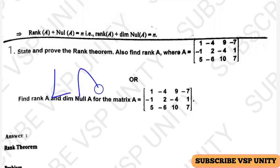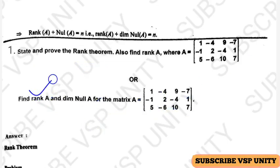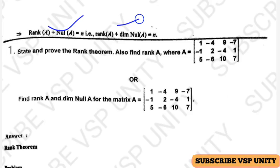Hello everyone, in linear algebra, I am going to talk about the topic of unit 2. The last topic based on the rank theorem — we have some problems. We will see how to find rank A and dimension of null A by using the rank theorem. This is the statement of the rank theorem, already discussed in the previous video. Once see that video. If you are going to subscribe to this channel, you can subscribe, like, and share it.